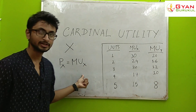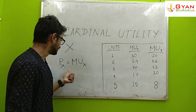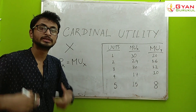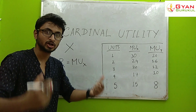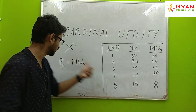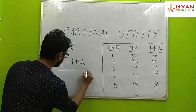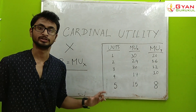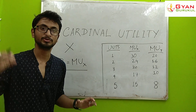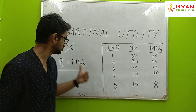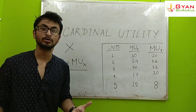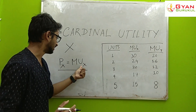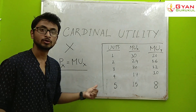At this equilibrium point, if you consume more of the commodity beyond this condition, the marginal utility will be reduced. So the consumer maximizes utility when Price of X equals Marginal Utility of X.